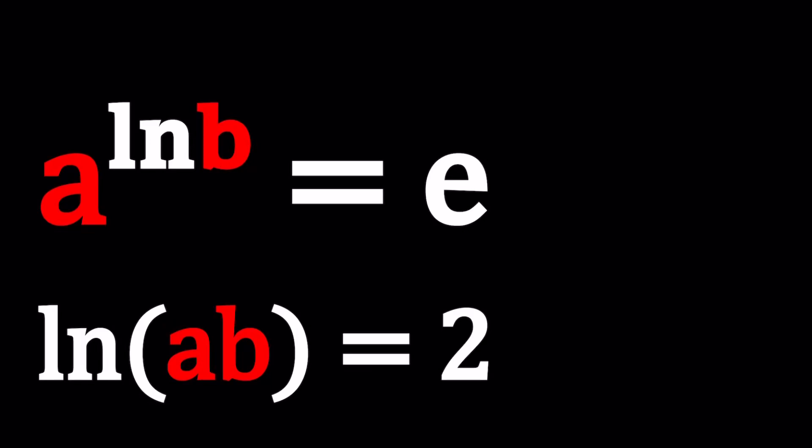Hello everyone. In this video, we're going to be solving a logarithmic system with natural logs. We have a to the power ln b equals e, and ln ab equals 2. We're going to be solving for a and b values. I'll be presenting at least two methods, and let's see how this goes.